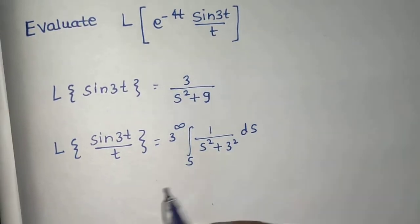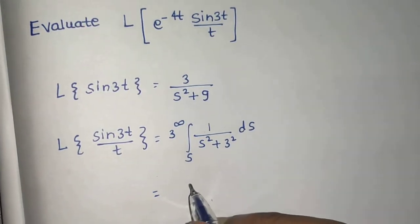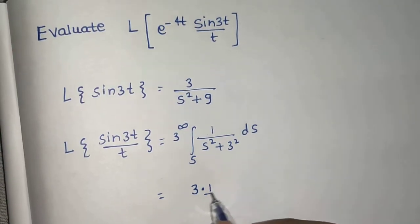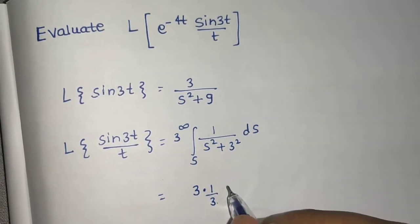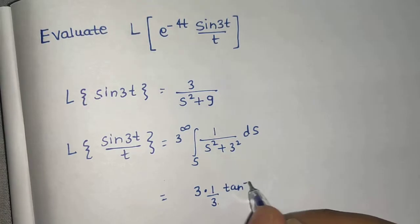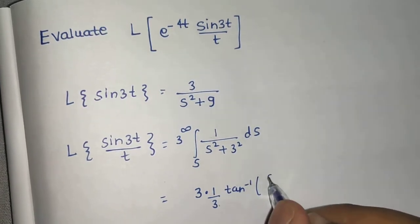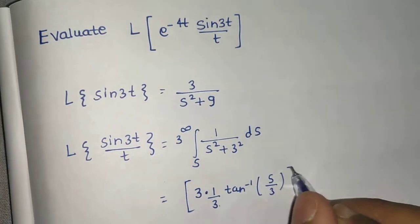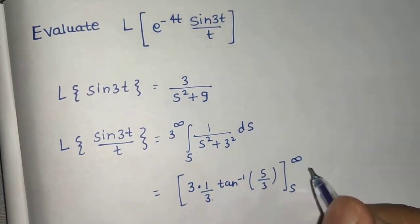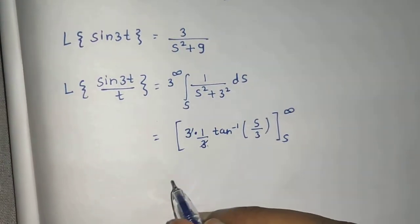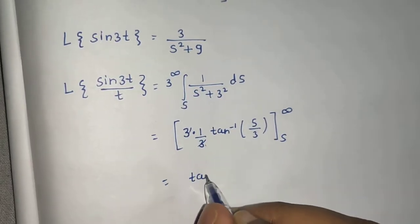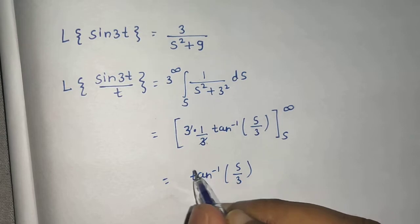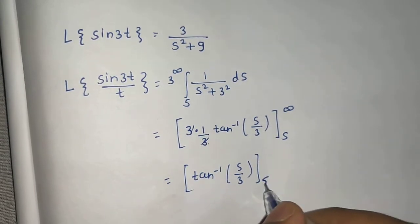1 upon x square plus a square. It is 1 by a. So 1 by a here is 3. Tan inverse x by a. So tan inverse s by 3. And we will do the integration from s to infinity.